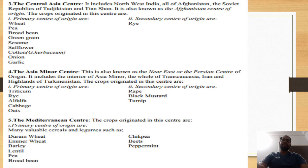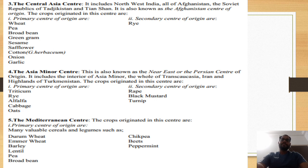Central Asia includes North-West India and the entire Afghanistan region. The crops that come under the Central Asia center of origin are broadly: broad bean, green gram, sesame, sunflower, cotton, onion, garlic, and pea. The secondary center of origin for Central Asia is rice only.